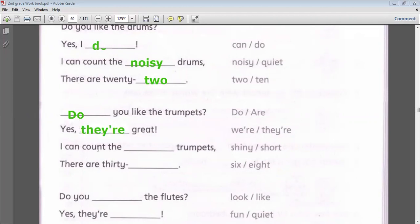I can count the shiny or short trumpets. Are the trumpets short? No, so they are shiny. There are 30, 36, or 38. Both of them are correct, but in the book they say 37. So here we have to write 'seven', not eight or six.